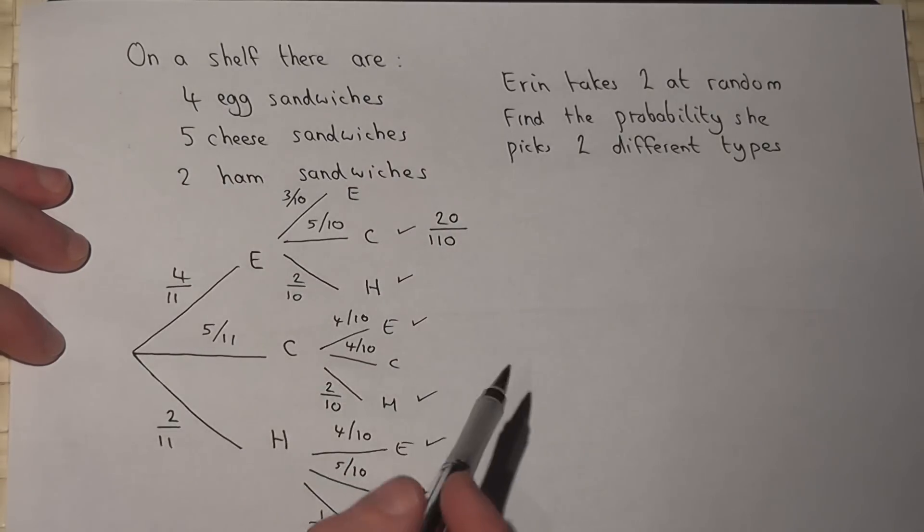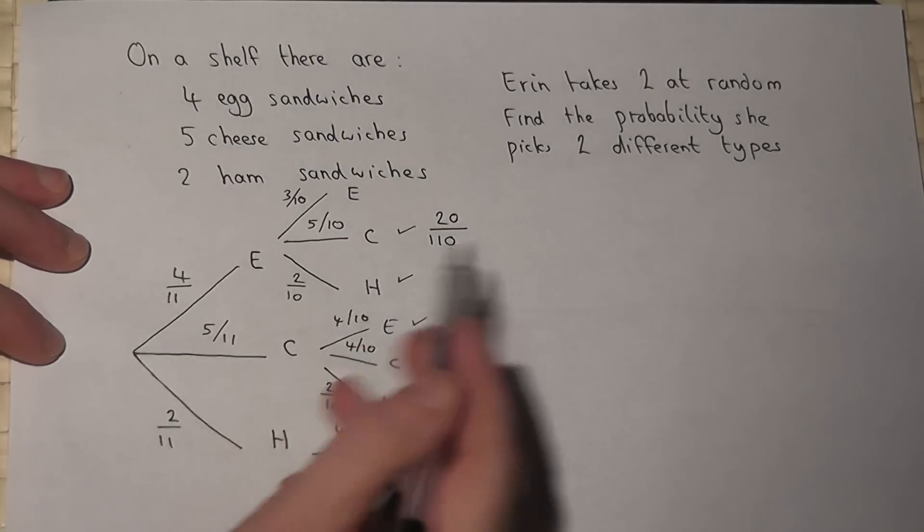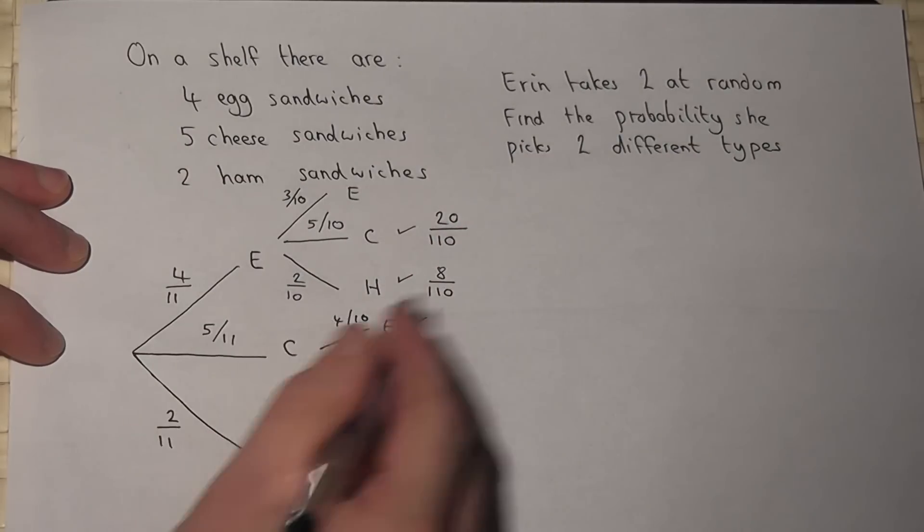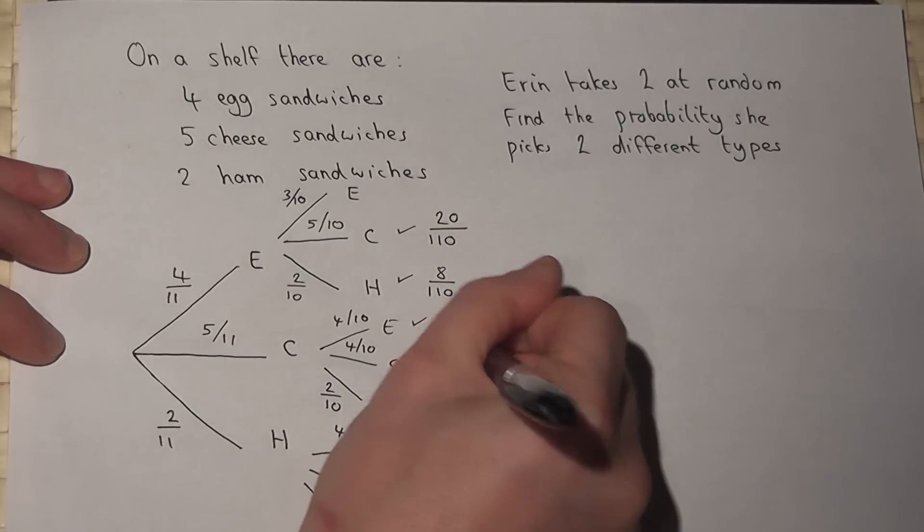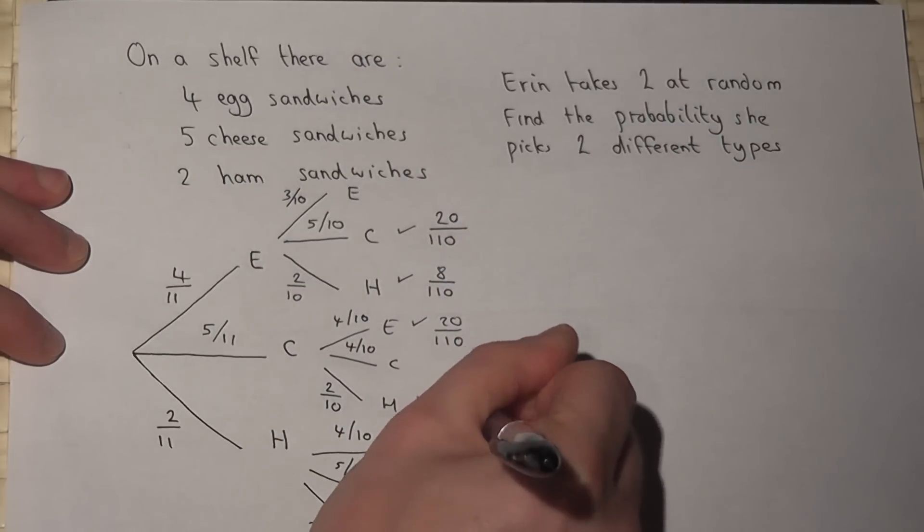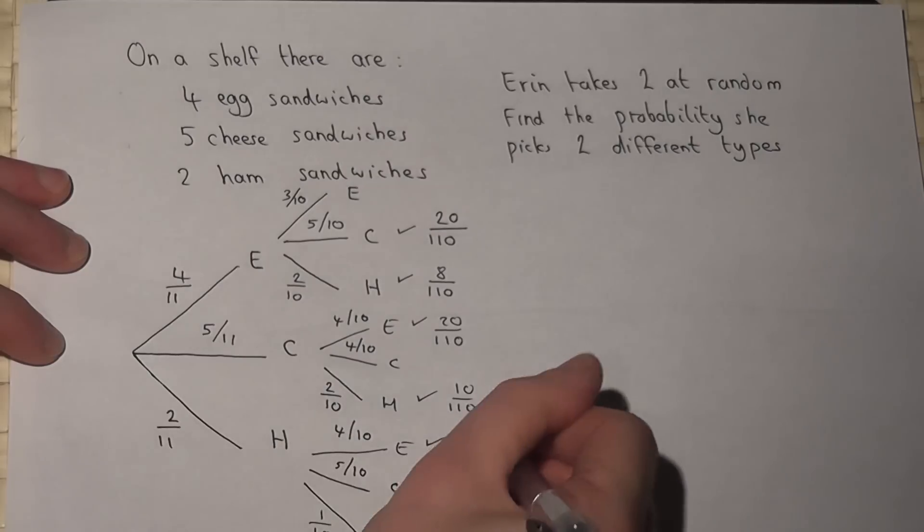Four times two is eight, eight out of 110. Five times four is twenty out of 110. Five times two is ten, ten out of 110. Two times four is eight out of 110, and two times five is ten out of 110.